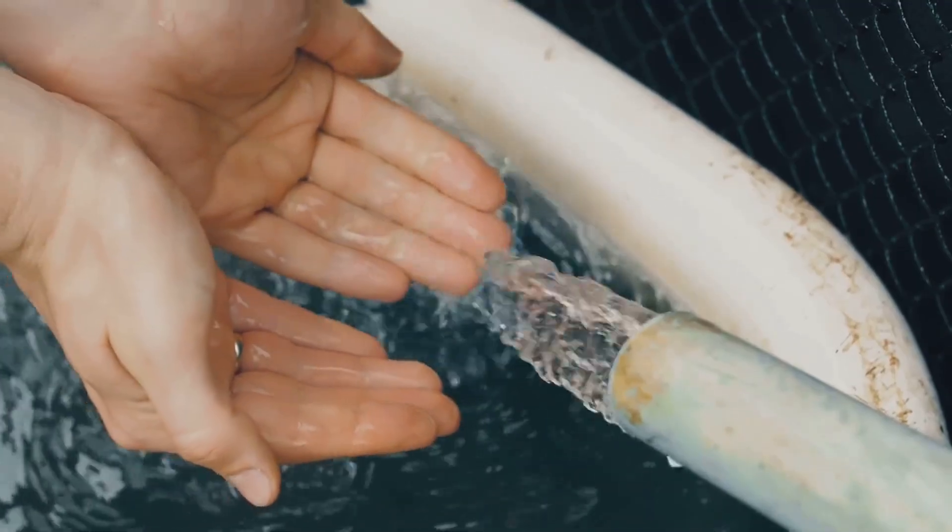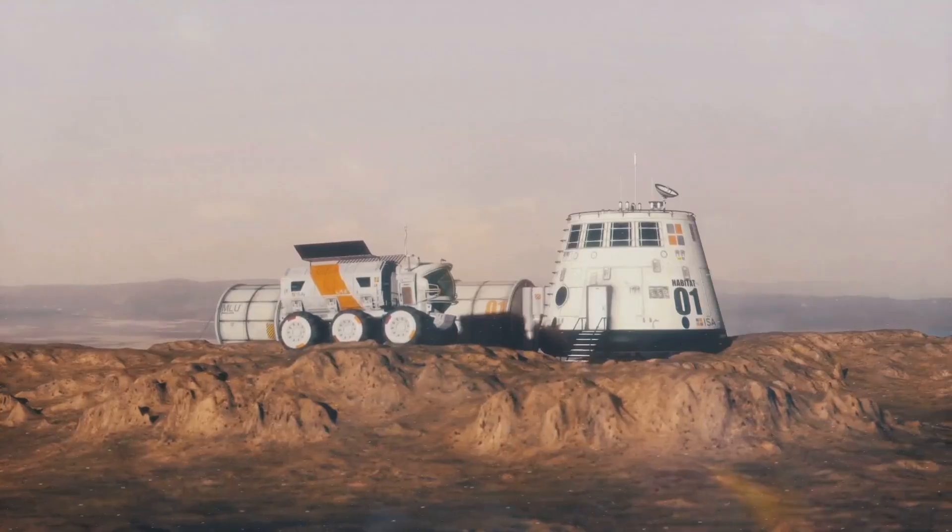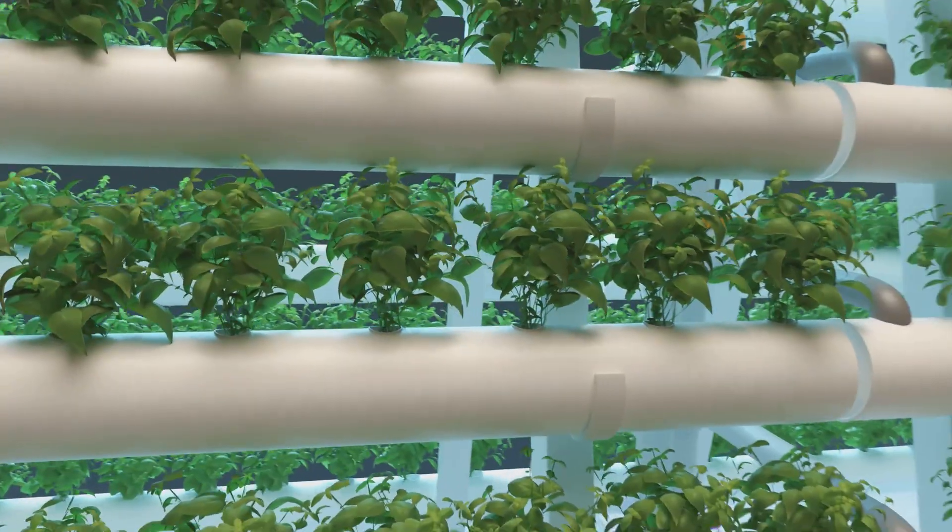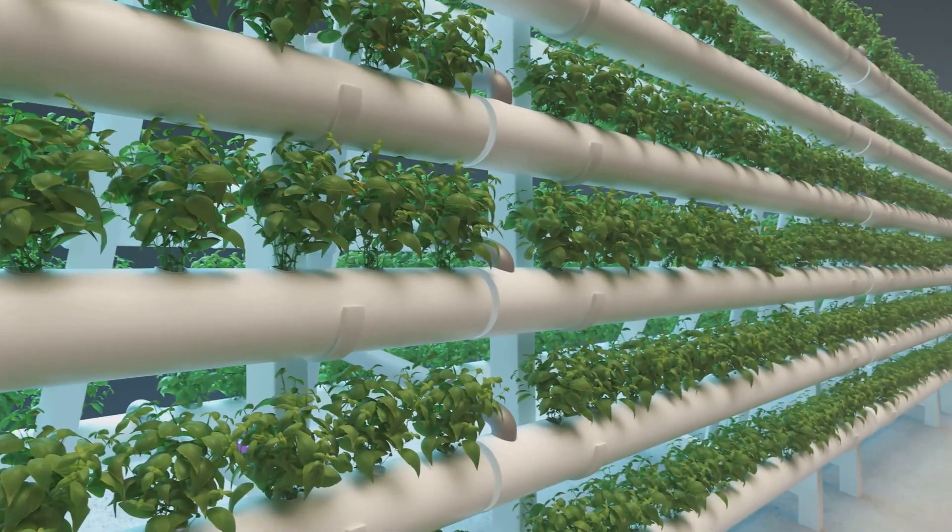Colonies need air, water, and food to survive. We'll have closed-loop systems recycling everything, but the key will be using local resources, like mining ice for water or extracting minerals from the soil. Hydroponic and aeroponic farms will grow fresh food inside the habitat, keeping the colonists healthy and sane.